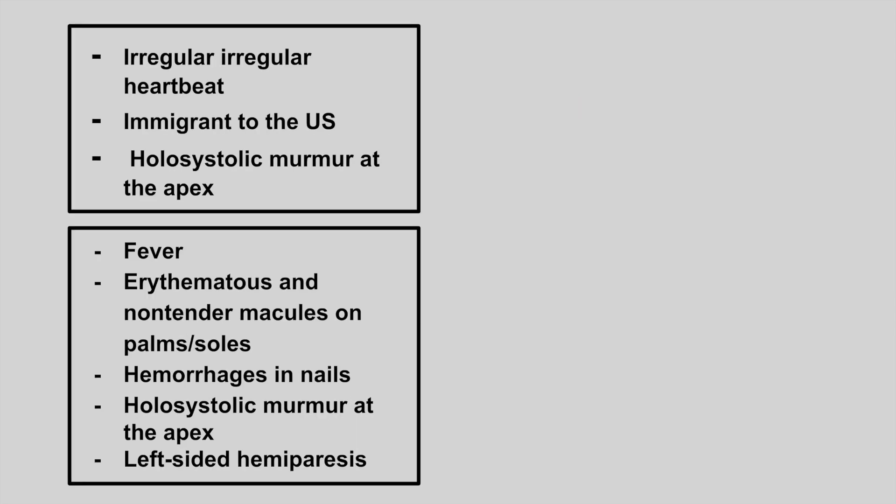The next one is someone who presents with an irregularly irregular heartbeat. They are an immigrant to the U.S. and have a holosystolic murmur at the apex. This is rheumatic fever. Rheumatic fever has the Jones criteria, which stands for joint pain, murmur, subcutaneous nodules, erythema marginatum, and Sydenham's chorea.